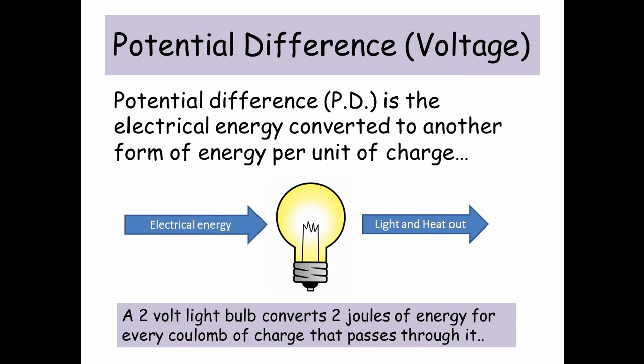So for example, a 2 volt light bulb converts 2 joules of energy for every coulomb of charge that passes through it. So it's taking electrical energy and converting it into light and heat.